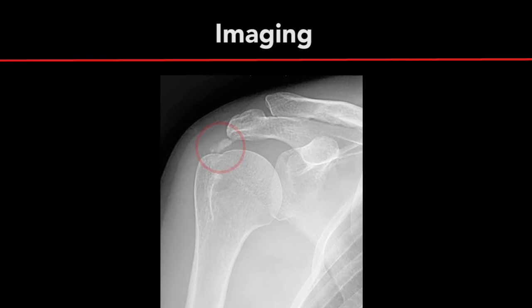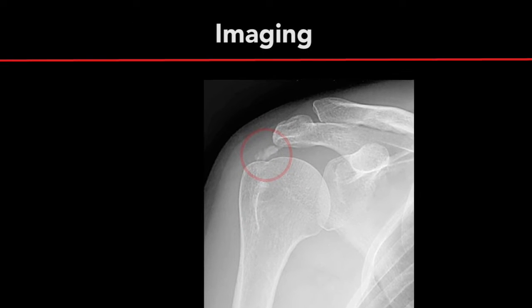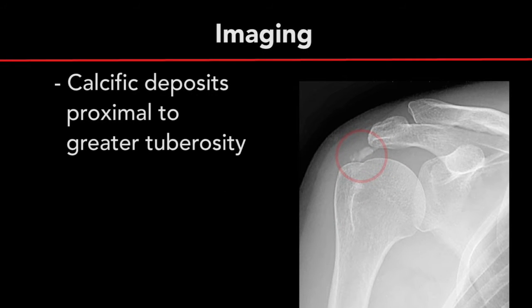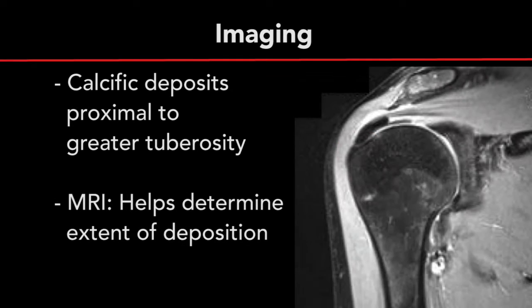The diagnosis is generally made by radiographs. Radiographs demonstrate the typical appearance of calcium deposits in the supraspinatus tendon, proximal to the greater tuberosity. An MRI is often helpful to further elucidate the extent of the calcific tendinitis.